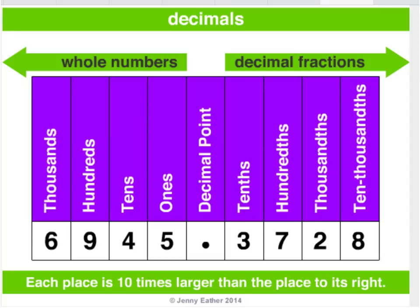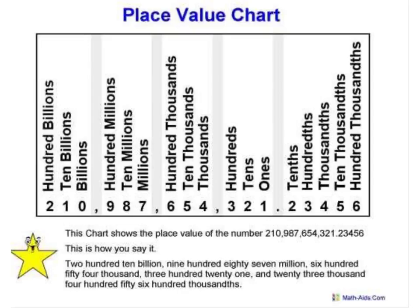However, it even goes beyond that and can become much more complicated for students. For example, here's the place value chart for a very large number — 210,987,644,321 — expressed to the hundred thousandths. It's no wonder that some students get confused with place value, which is why it's important that students are exposed to it and have time to practice it.